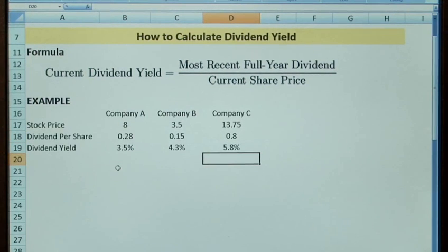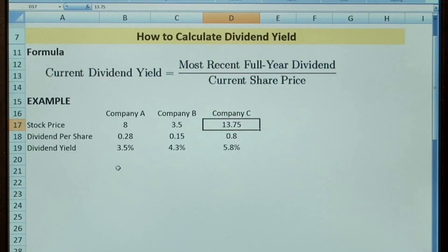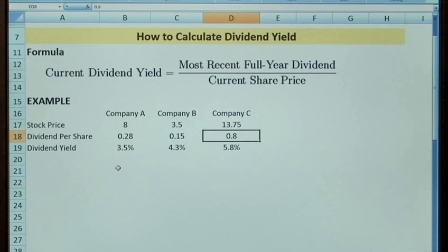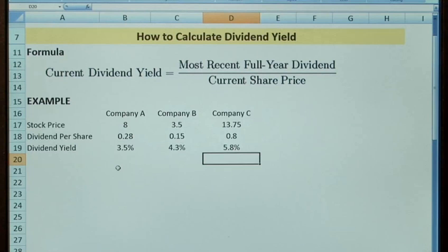So we'd say that company C, with the higher stock price, looks like a more established company issuing higher dividends to its shareholders, and that would be one that's more appealing than the others if we're looking to generate a return from dividends as opposed to a share price increase.